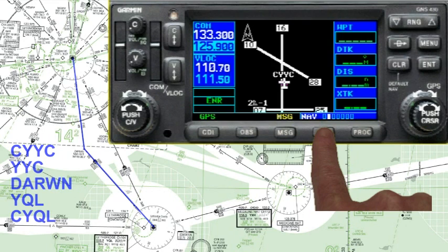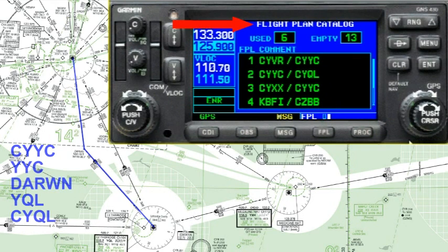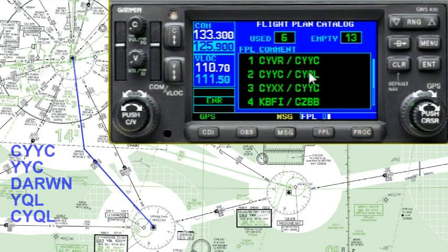We'll get started by pressing the flight plan button. Usually when you pop up into the active flight plan there will be a flight plan from the previous flight — it just happens to be empty in this case. There are two flight plan pages: flight plan one is the active flight plan, and flight plan two is the flight plan catalog. There are six flight plans currently in the catalog.